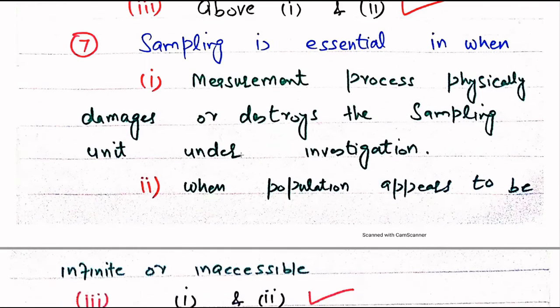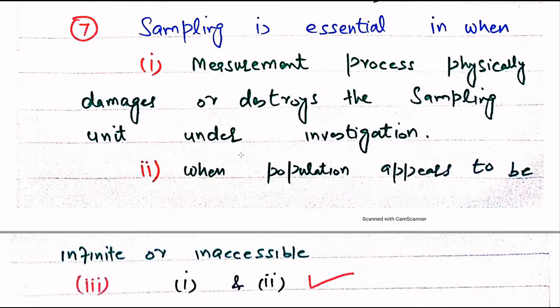Question number 7. Sampling is essential when: 1) the measurement process physically damages or destroys the sampling units under investigation, or 2) when the population appears to be infinite or inaccessible. Both 1 and 2 are the right choices — under these two conditions, sampling is essential.